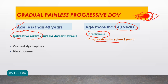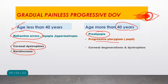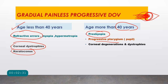Moving to corneal pathologies: in age less than 40 years we have corneal dystrophies and keratoconus (conical cornea). Corneal dystrophies are hereditary and usually seen in younger patients. In age more than 40 years, the counterpart is corneal degenerations. In most cases, these do not cause pain and are a reason for gradual painless progressive loss of vision.